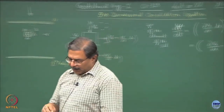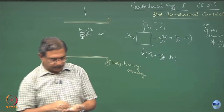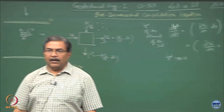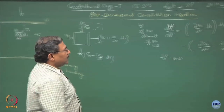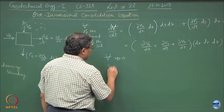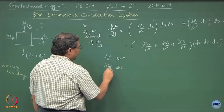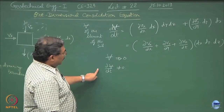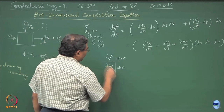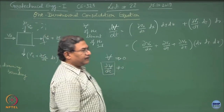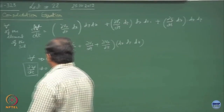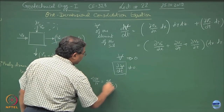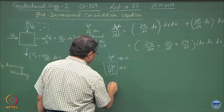If we consider the soil element as incompressible, dV/dt equals zero. But soils are mostly compressible, so dV/dt is not equal to zero. Assuming one-dimensional consolidation, we need a relationship for the rate of change of volume with respect to time. We use the previously derived relationship: delta h / h = delta e / (1 + e₀), which leads to delta h = mv · delta sigma prime · h. The effective stress delta sigma prime equals delta sigma minus delta u (delta uw).